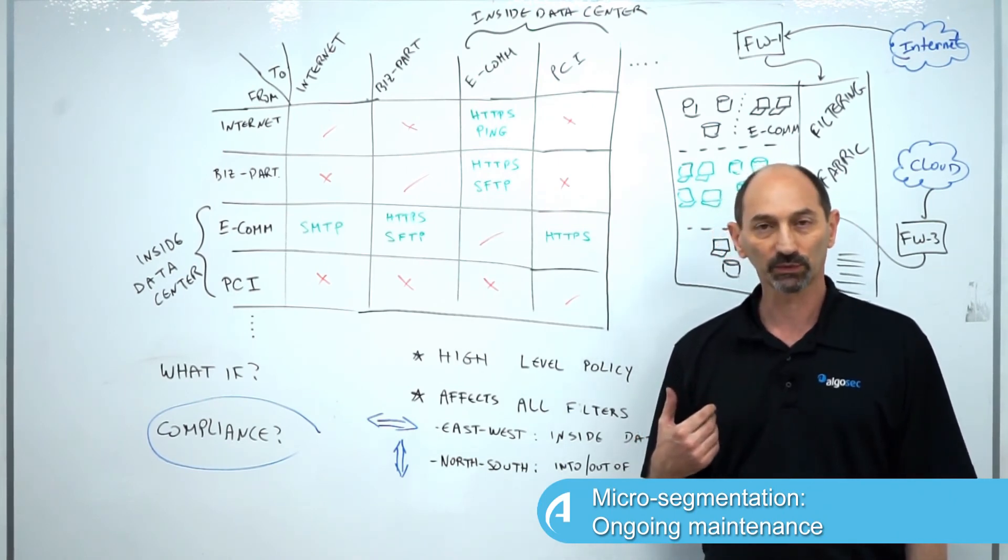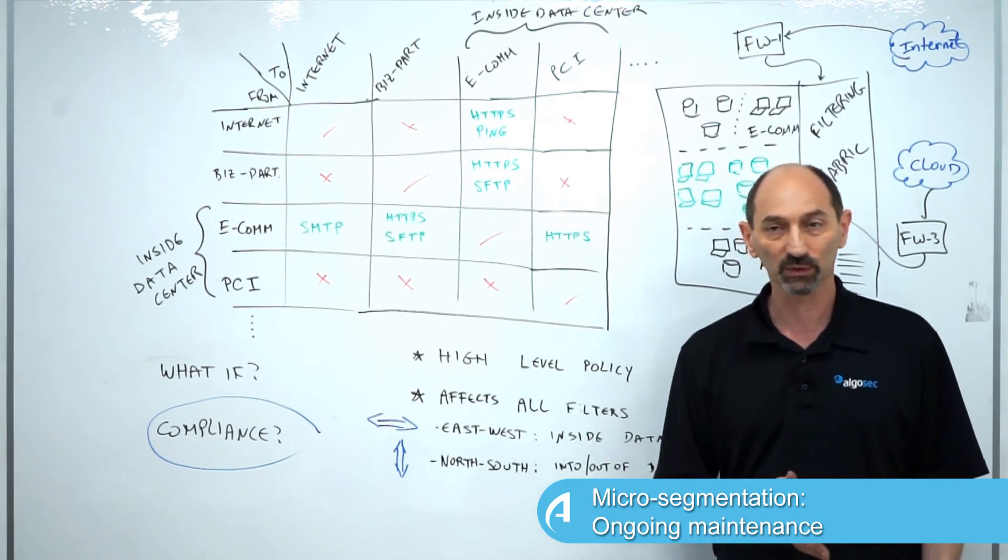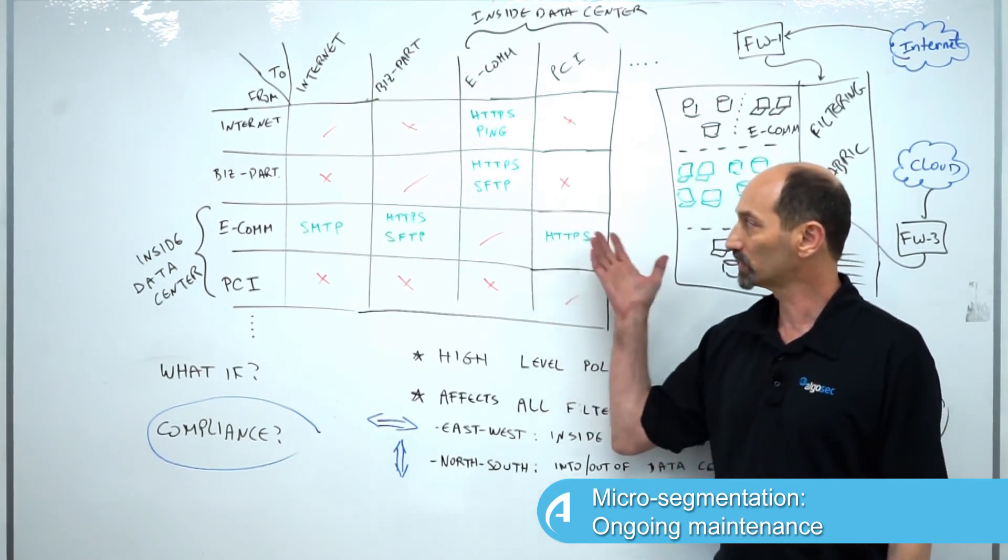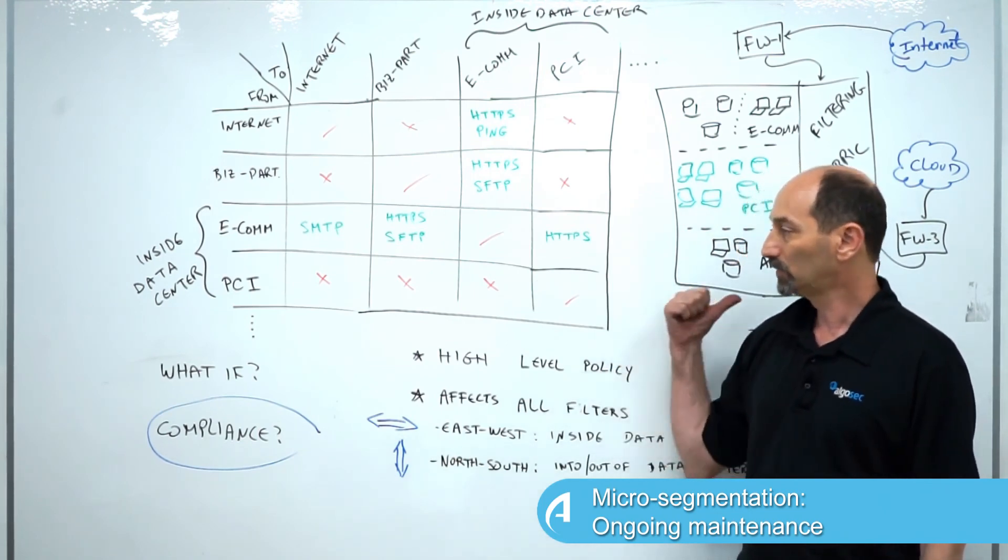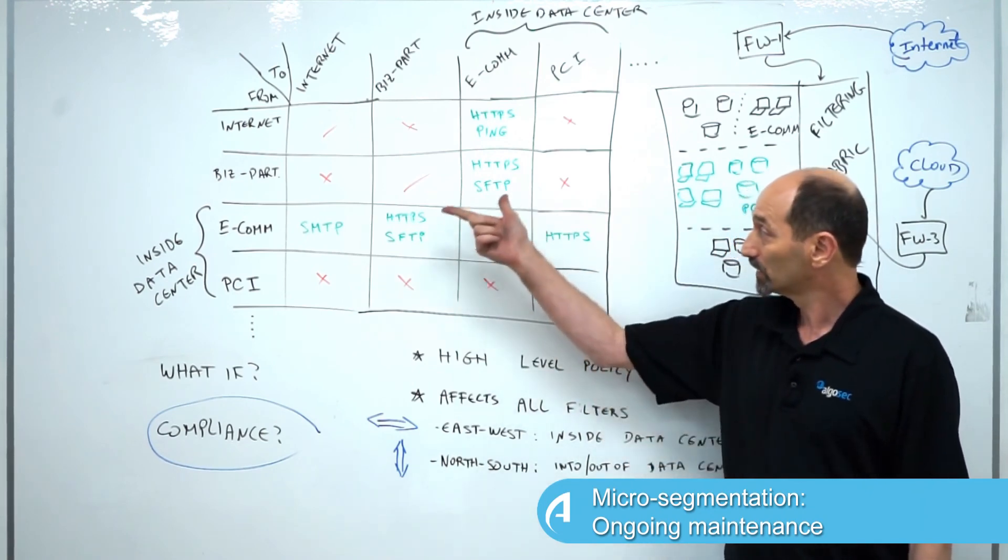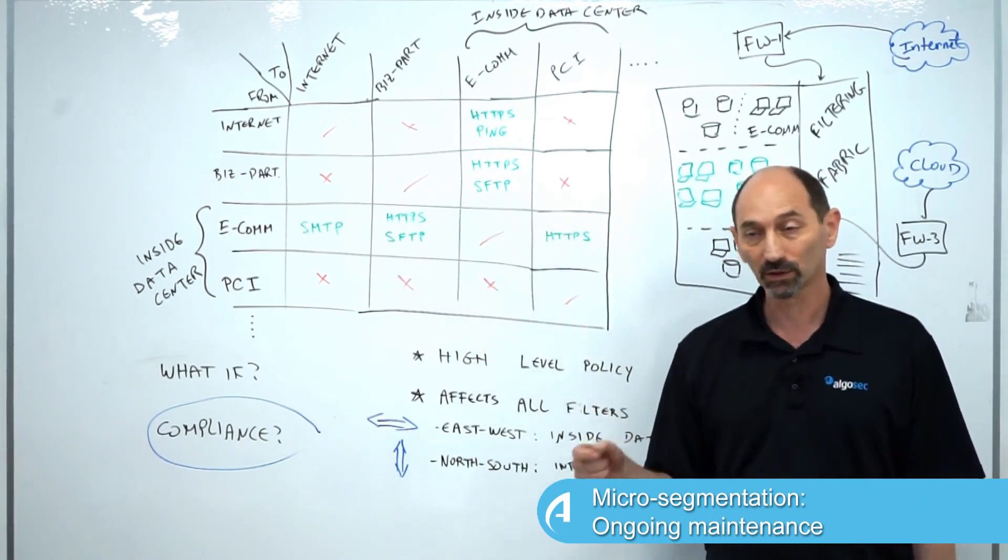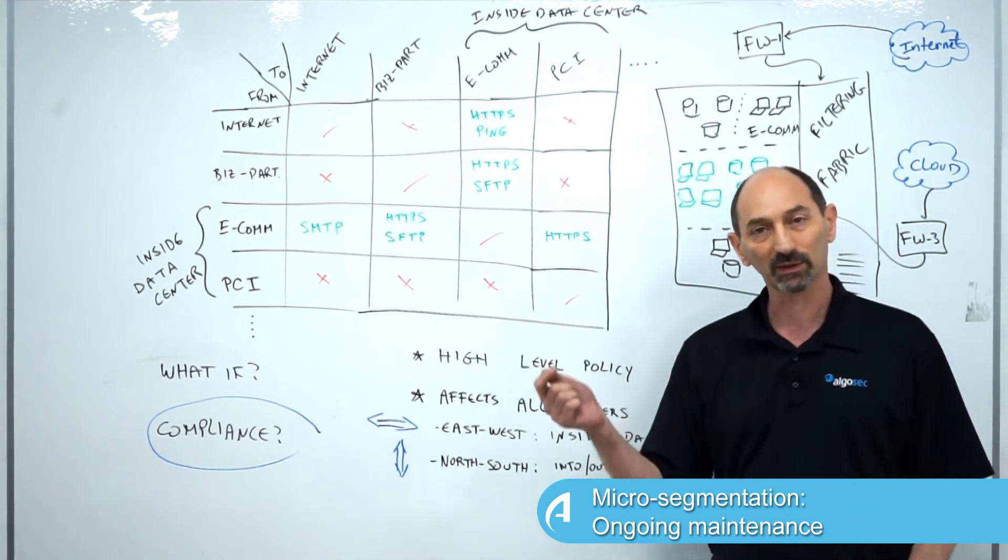This structure is a useful structure for information security professionals to use to think about what is supposed to be allowed and what is not supposed to be allowed. There are technologies that can use it directly to automate various tasks. Using a micro-segmentation project allows this structure to be much more granular and to indicate more specifically what is allowed inside, outside, and into and out of the data center.